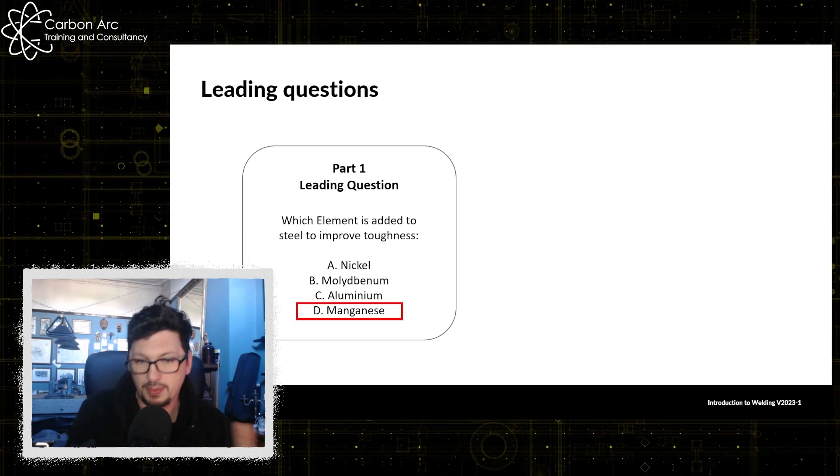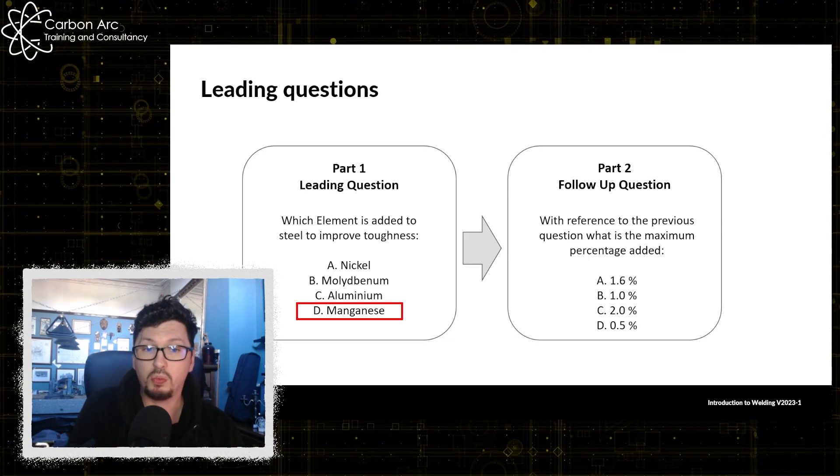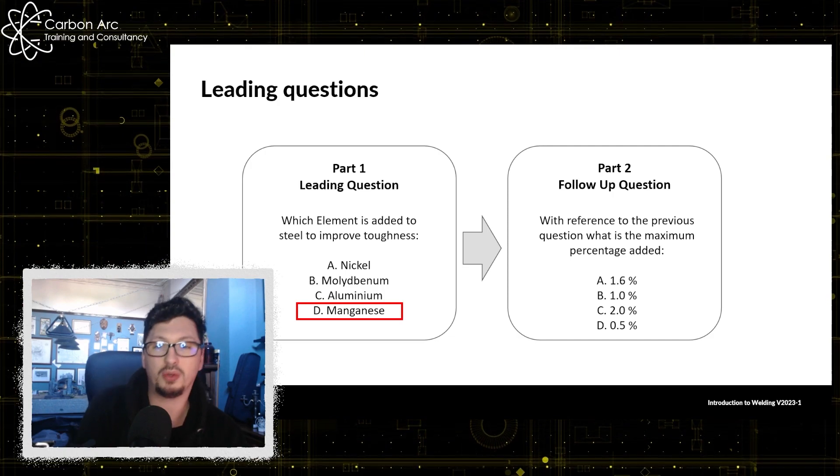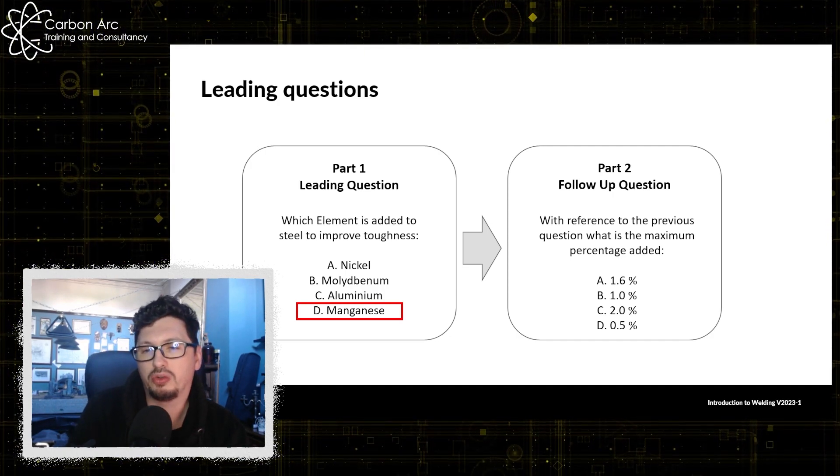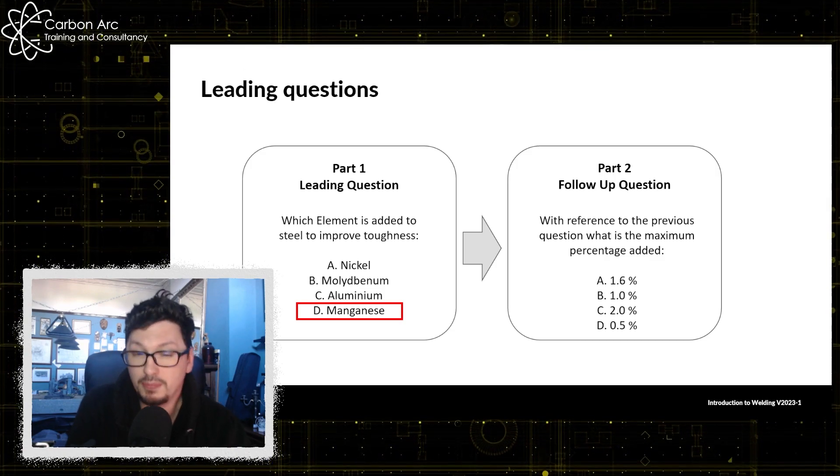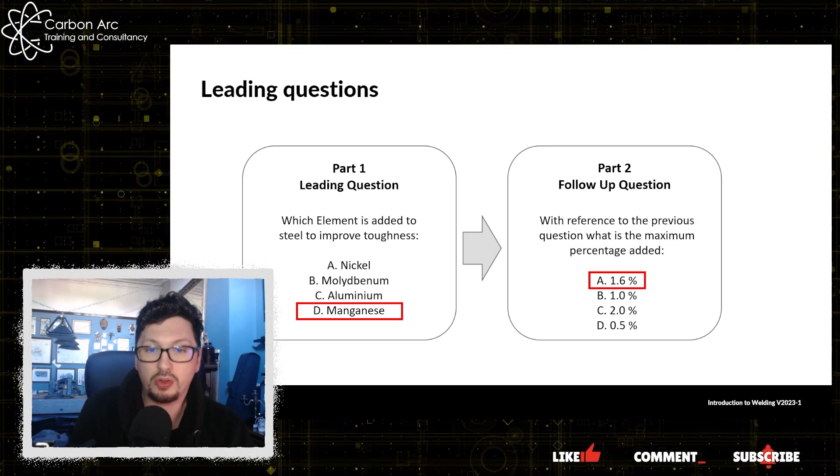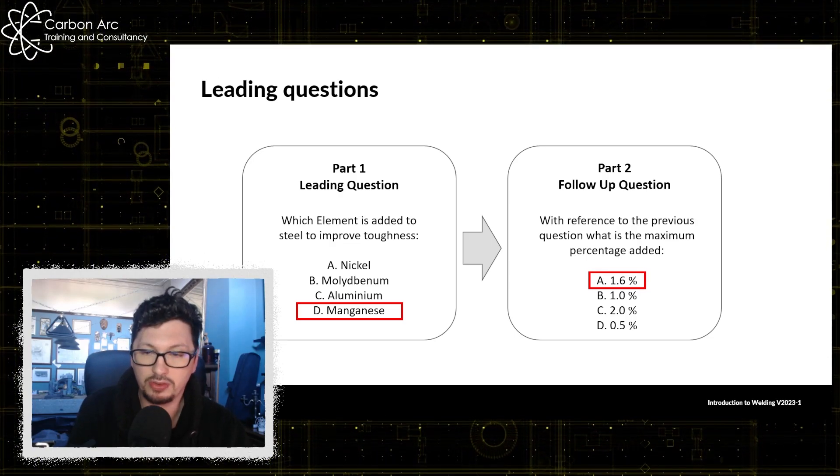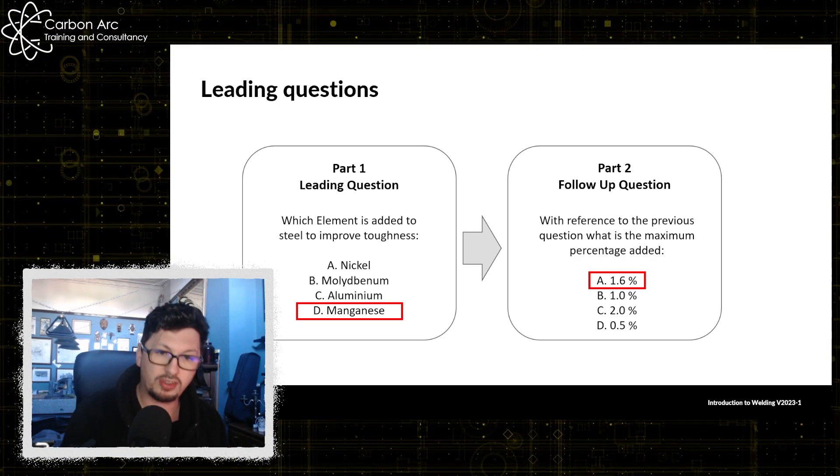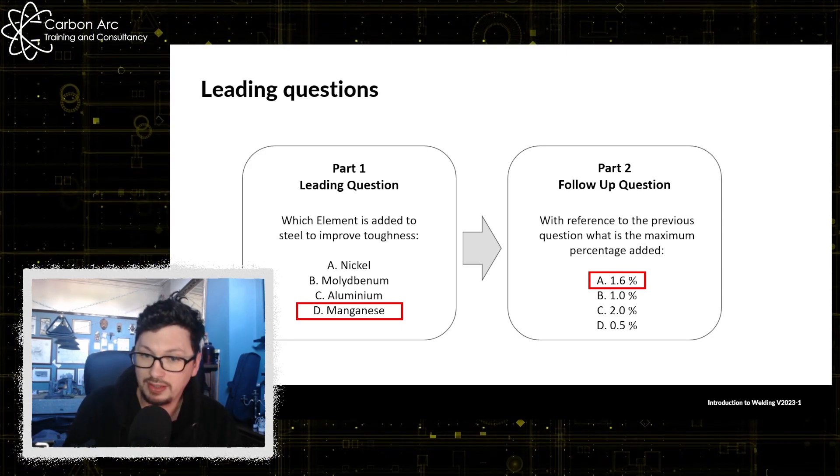Then the second term is okay, well how much of this element would we add as a maximum normally with reference to question one? So we know that manganese we add a maximum of around 1.6 percent by volume into our steel. So that would make a carbon manganese steel. So again question A, if you get that wrong, move into question B, you'll get that wrong as well very likely.